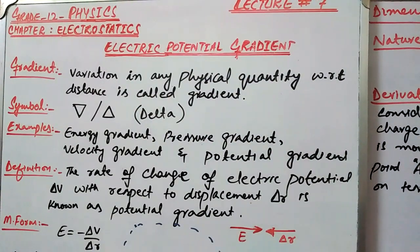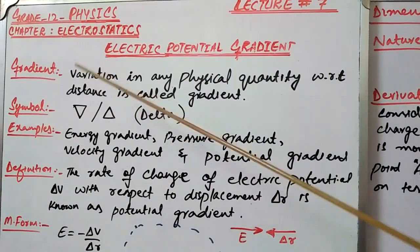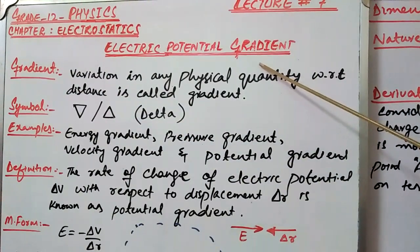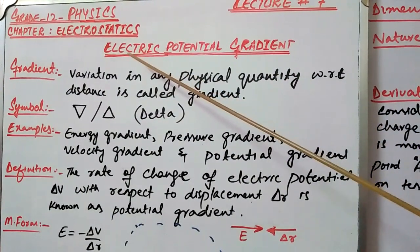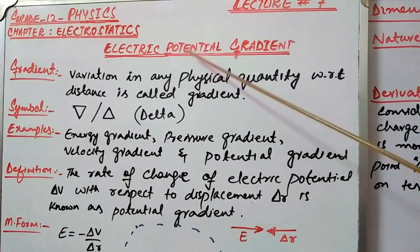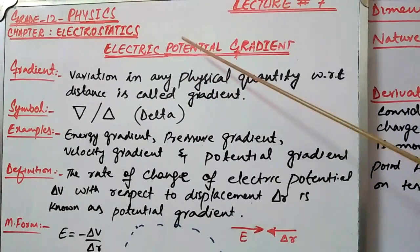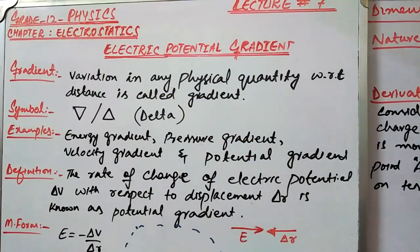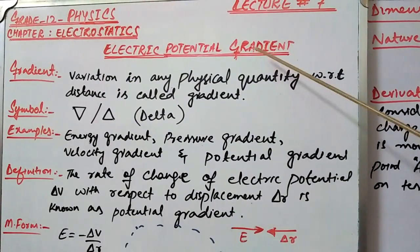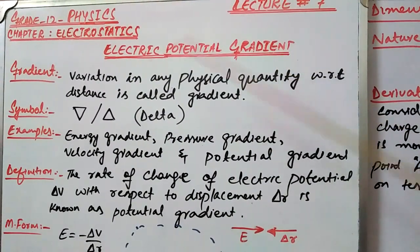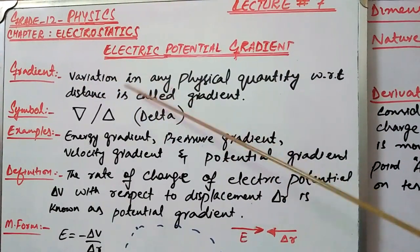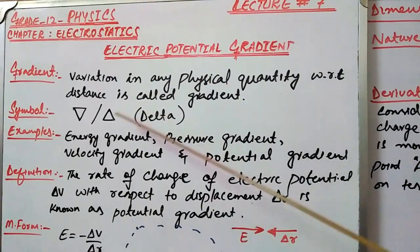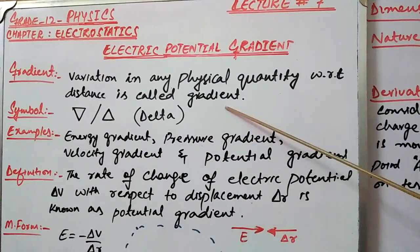First we'll see what is gradient. You are already familiar with electric potential from our previous lecture. Gradient is defined as the variation in any physical quantity with respect to distance.